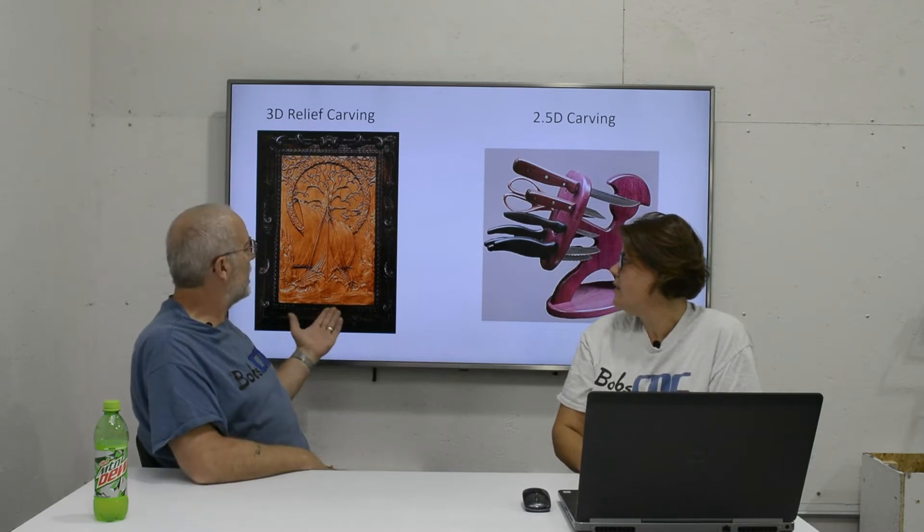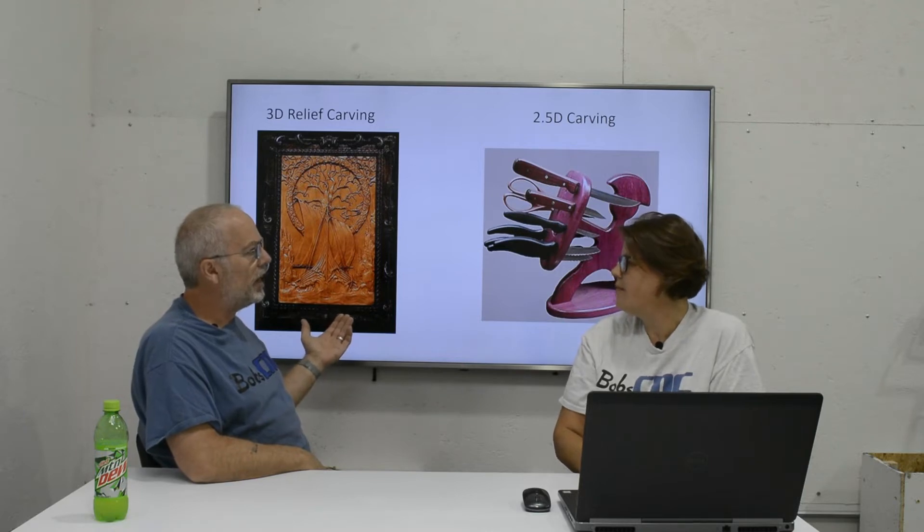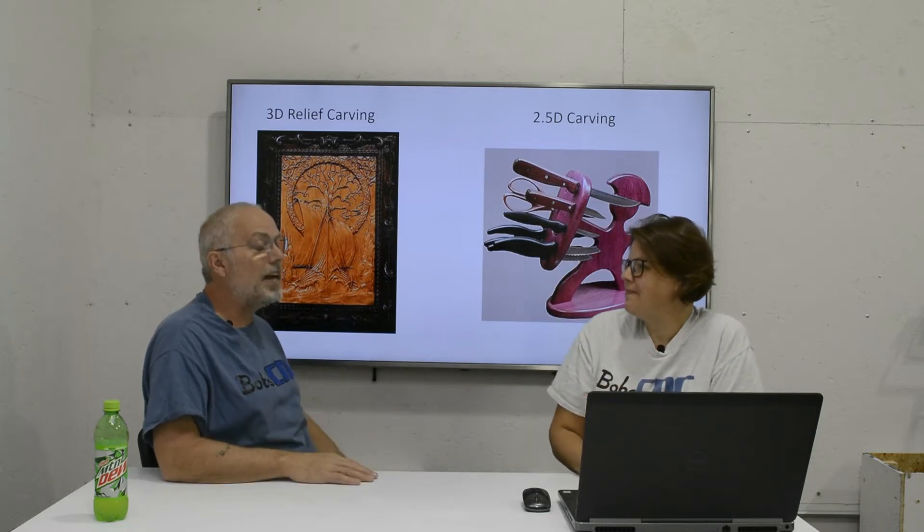3D relief carving is a little bit different. Kristin called it a contour — the official name is relief carving. What it means is that as the X and Y are moving along the cut, the Z can also make adjustments, so you can contour-cut as you move along. This matters because of the program you use — the software you choose.